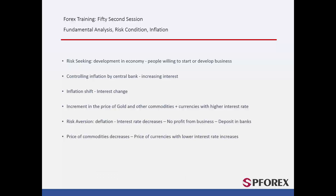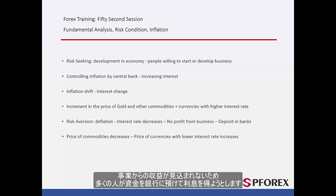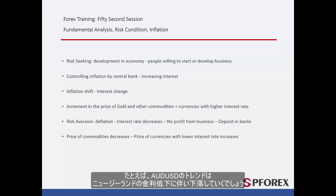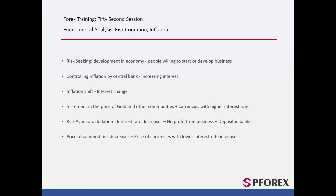In a risk aversion downturn condition, most people deposit their funds or capital into banks to receive interest, since they cannot derive any profit from their business. Due to a higher volume of liquidity in a financial market, banks reduce their interest rate to make people invest in their own business. In this condition, there is an increment in currencies with lower interest rates, such as US dollars and British pounds. Australian dollars against US dollars would trend towards the bottom as interest in New Zealand decreases. Gold, commodities and stocks may also decline to a lower price.